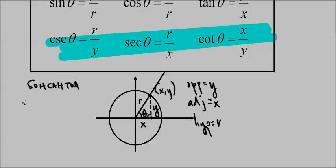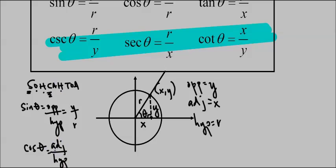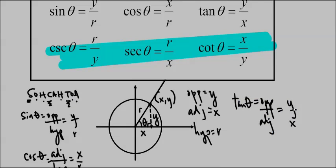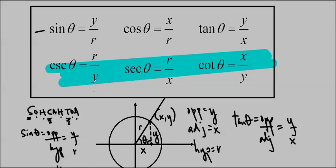Using our definitions from SOHCAHTOA, we know that sine theta is opposite over hypotenuse, which is y over r. Cos theta is adjacent over hypotenuse, so that's x over r. And tan theta is opposite over adjacent, so y over x. That's where we get these definitions. When you flip them over, you get the reciprocals: y over r flipped is r over y, x over r is r over x, and y over x is x over y.